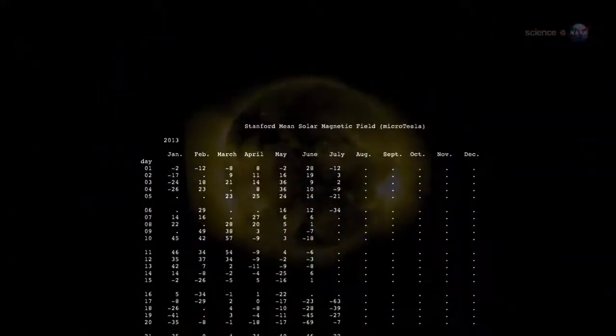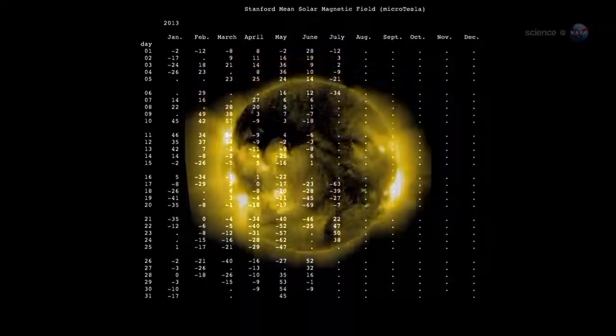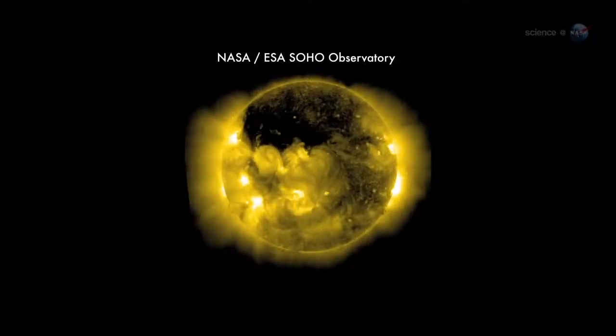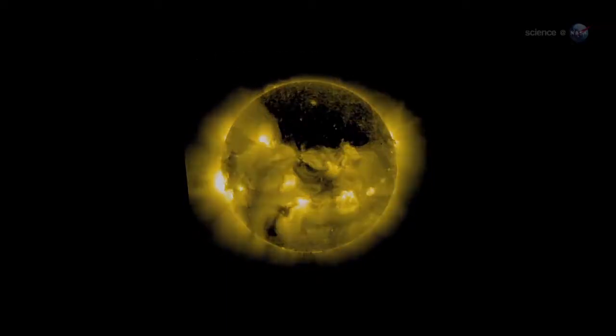As the field reversal approaches, data from Wilcox show that the Sun's two hemispheres are oddly out of sync. The Sun's North Pole has already changed sign, while the South Pole is racing to catch up, says Shearer.